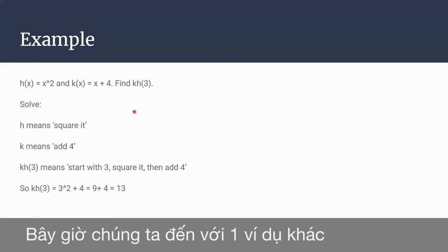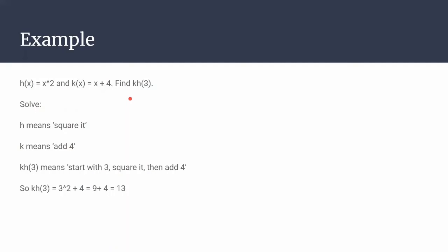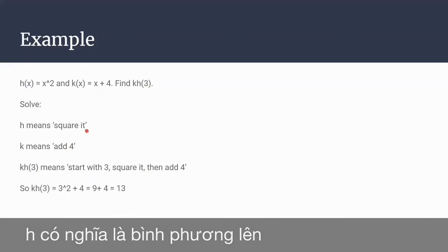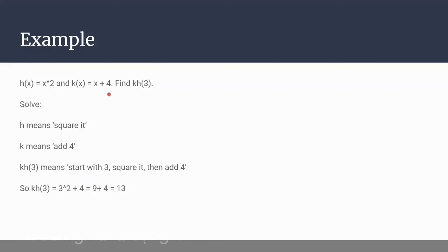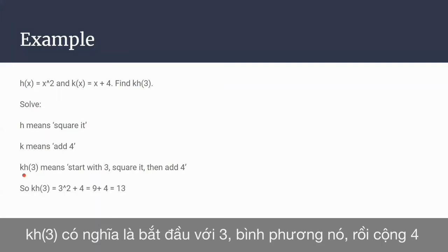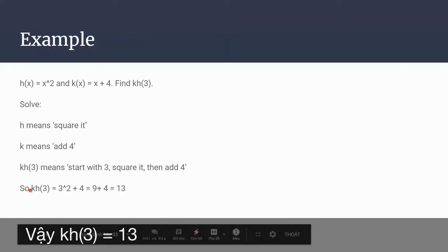Now here's another example. We have h(x) equals x squared and k(x) equals x plus 4. To find k(h(3)), start with 3 squared and then add 4, because we apply h first and then k. Therefore, k(h(3)) equals 3 squared plus 4 equals 9 plus 4 equals 13.